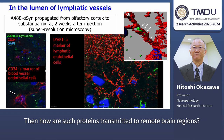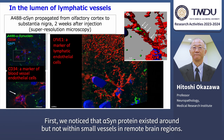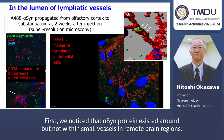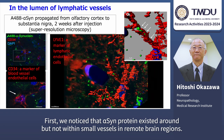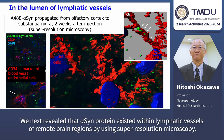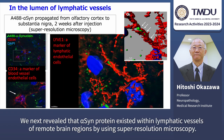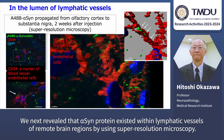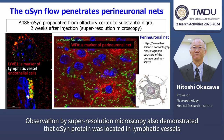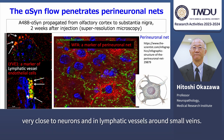Then, how are such proteins transmitted to remote brain lesions? First, we noticed that alpha-synuclein protein existed around, but not within, small vessels in remote brain lesions. We next revealed that alpha-synuclein protein existed within lymphatic vessels of remote brain lesions by using super-resolution microscopy. Super-resolution microscopy also demonstrated that alpha-synuclein protein was located in lymphatic vessels very close to neurons and in lymphatic vessels around small veins.